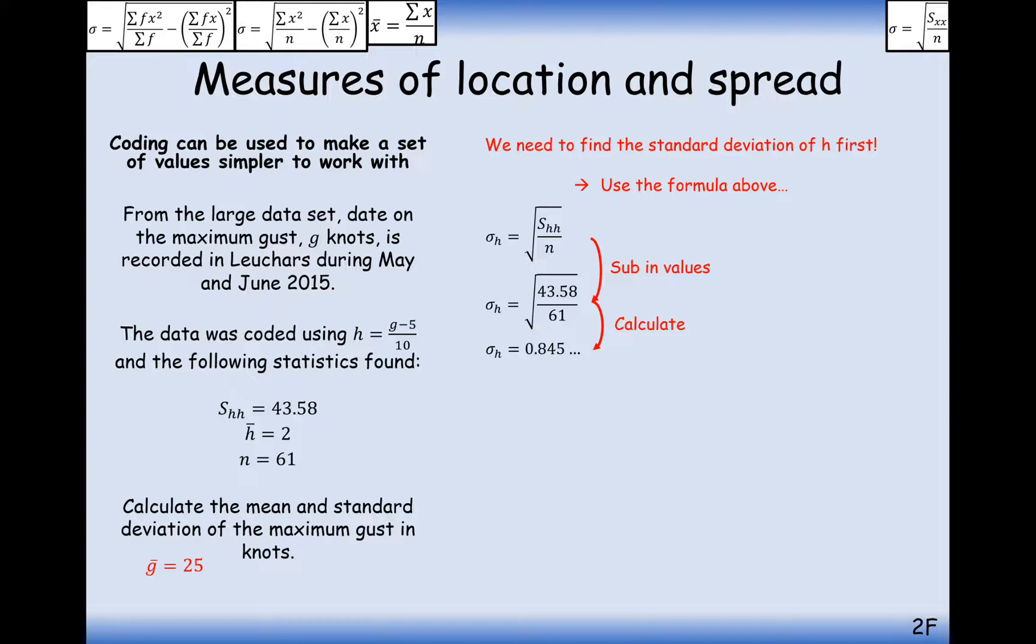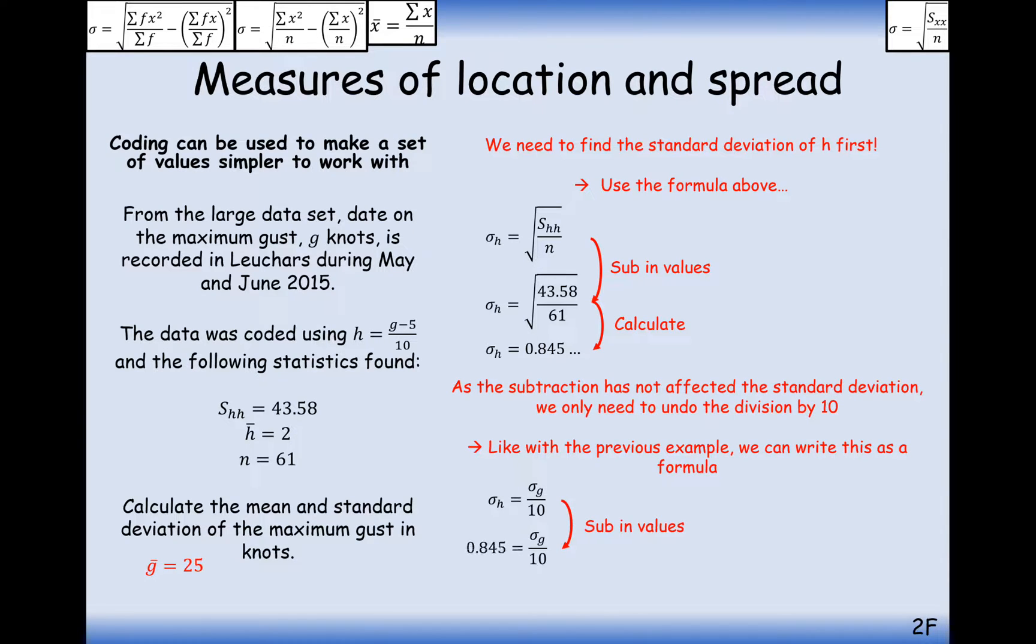Now let's work out the standard deviation of the G values. And remember, when we're decoding standard deviation, all we need to do is decode the multiplier effect. So times through by 10 and we get the standard deviation of the G values is 8.45. So going back to the data, on average, the data was spread out by 8.45 knots from a centre of 25 knots, okay, as the mean.